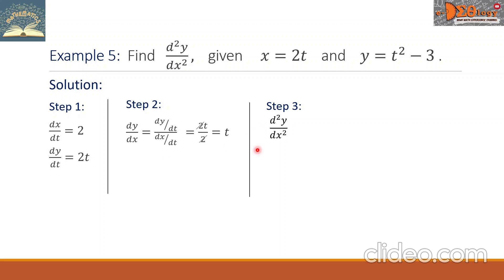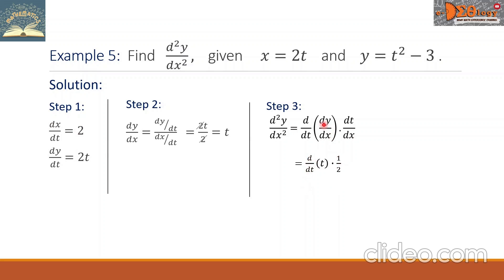Step 3: the second derivative. Using the formula d over dt of (dy over dx) multiplied by dt over dx: dy over dx is t from step 2, and dt over dx is the reciprocal of dx over dt, which is 1 over 2. Taking the derivative of t with respect to t gives 1, times 1 half. The final answer for the second derivative is 1 half.